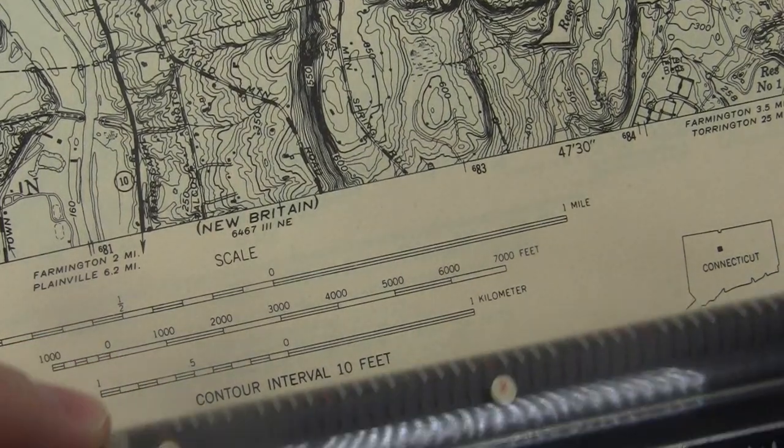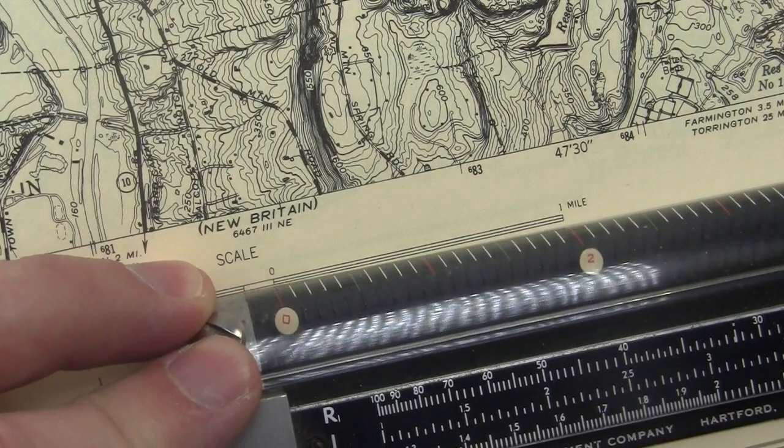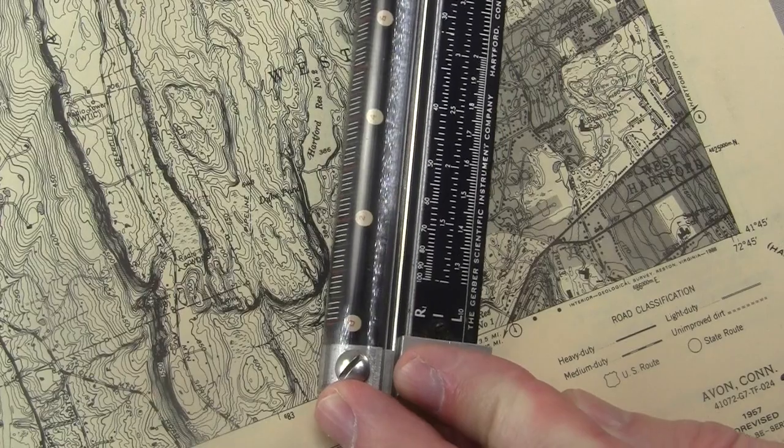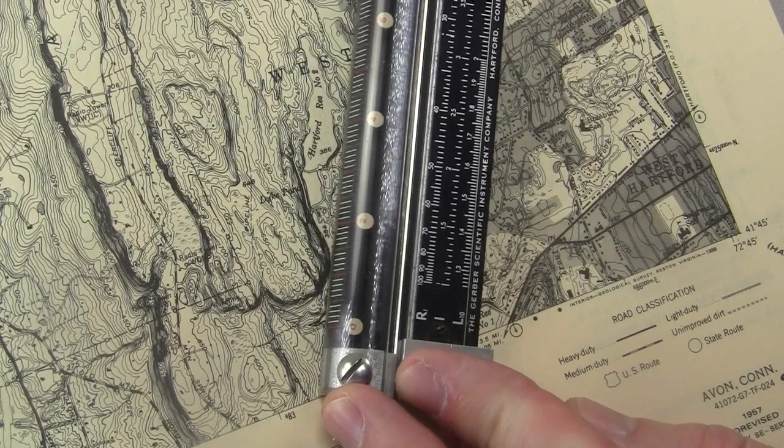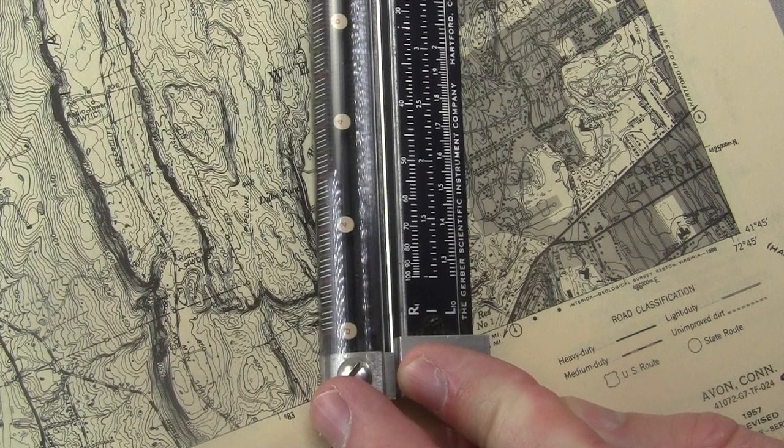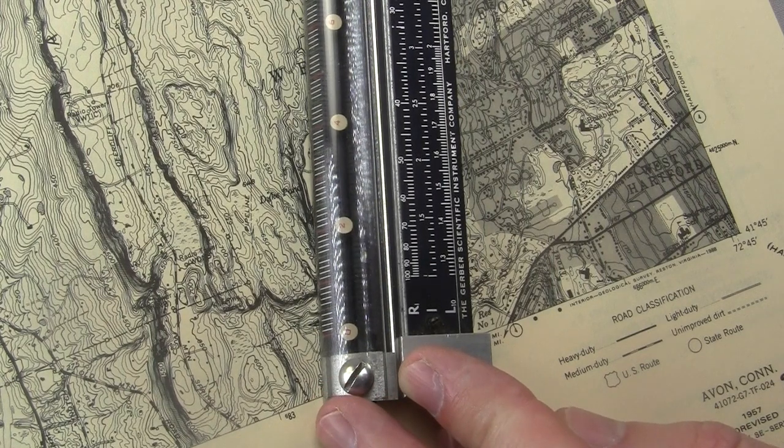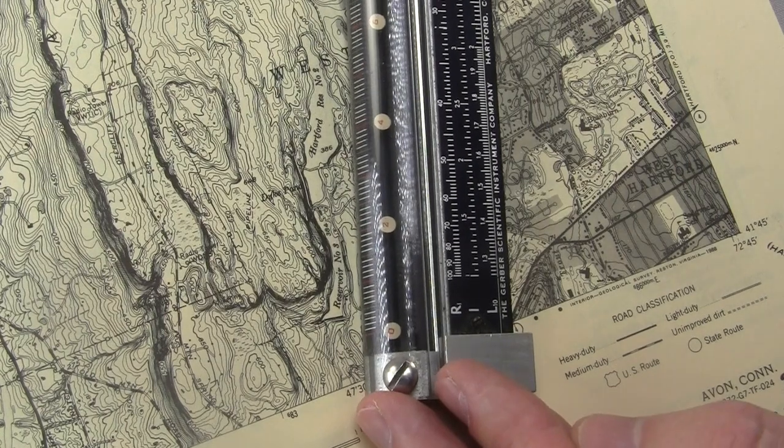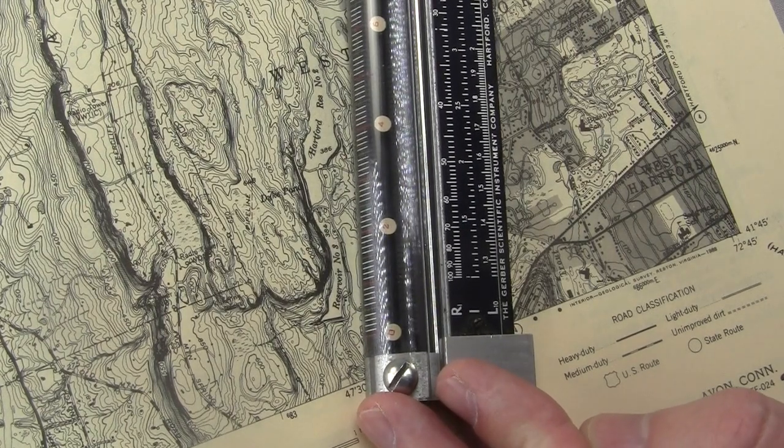I'll make it so one mile measures four on the variable scale, so each red unit on the variable scale is a fourth of a mile. And now I can just measure whatever I want on the map directly, and we won't have to convert any units. Looks like it's just about one and a half miles from the end of Hartford Reservoir number two to the other end of Reservoir number three. We gerbing now!